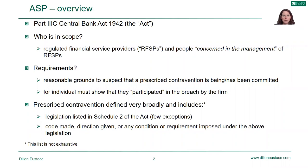So what is the ASP? The ASP is provided for in Part 3C of the Central Bank Act of 1942 and it allows the bank to impose sanctions on firms or individuals for certain regulatory breaches. In terms of who's in scope, it applies to regulated financial service providers and people who are concerned in the management of those firms. In order to sanction a firm or an individual, the bank needs to have reasonable grounds to suspect that a prescribed contravention is being or has been committed and, as regards an individual, it needs to show that they participated in a breach by the firm.